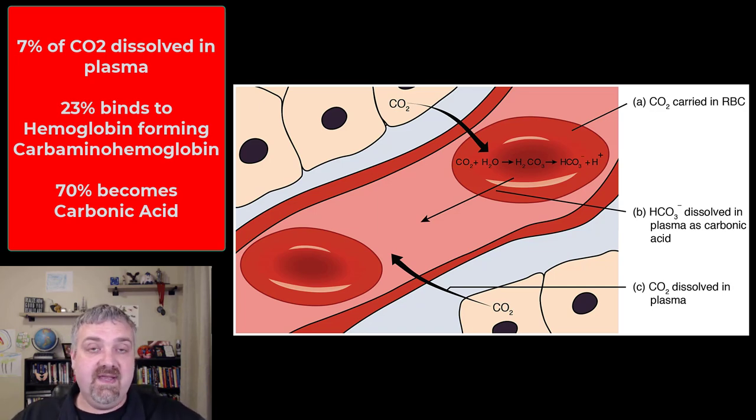So when you think hemoglobin, you should primarily think oxygen. That's its primary job, but it's like while I'm here, I may as well grab some carbon dioxide and carry it back to your lungs and that's what it does. So those are the three ways that carbon dioxide is transported through your circulatory system.